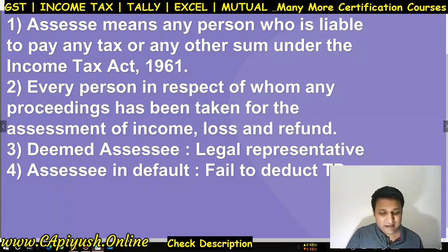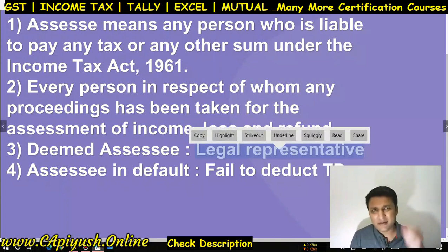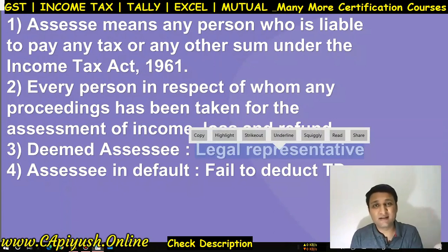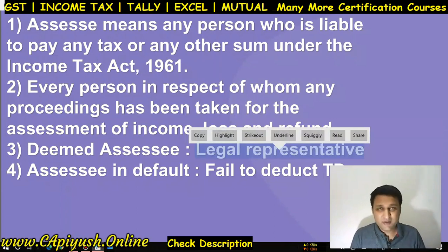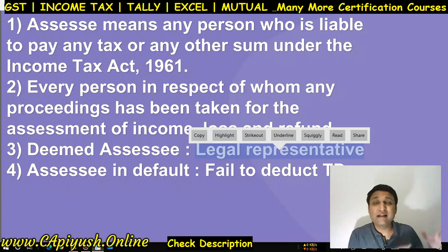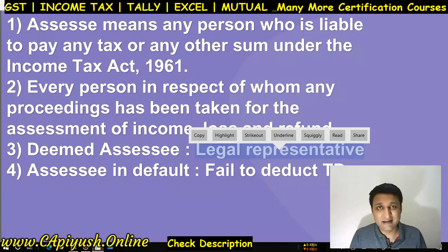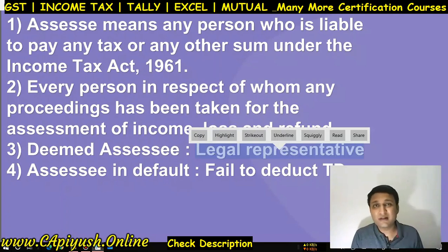Deemed assessee, legal representative — to summarize the main points: the person who is paying tax or filing the income tax return will be covered as assessee. This is the first type. The second is legal representative — if a person has died, then there is a legal representative who will handle the property, all the assets and liabilities, or represent it legally. So that legal representative will also be covered as an assessee.